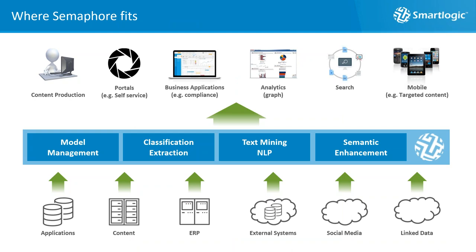Where does Semaphore fit in the enterprise? It fits between the sources of information and the consumers of information. The objective of Semaphore is essentially three things: to enrich the information assets of the enterprise with precise, complete, and consistent metadata; to harmonize different vocabularies inside and outside the enterprise; and to extract critical facts, entities, and relationships from information assets so they can be used in analytics and business applications.